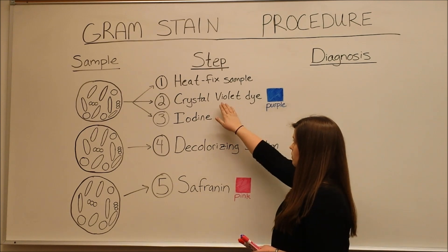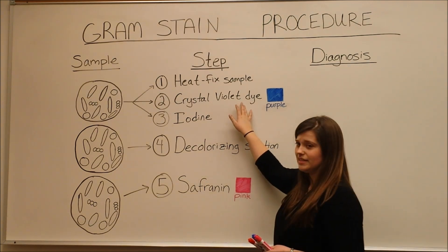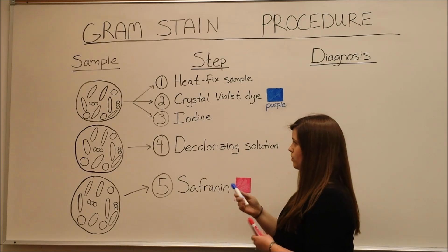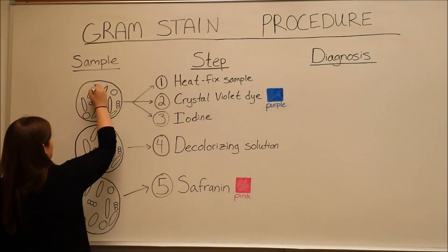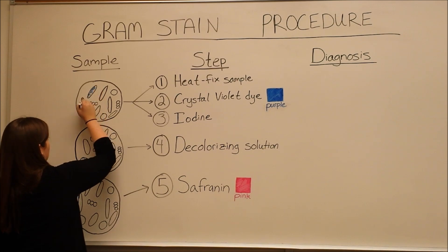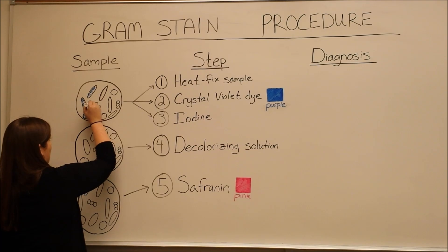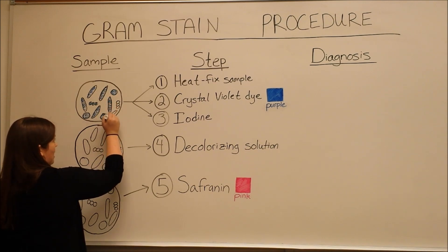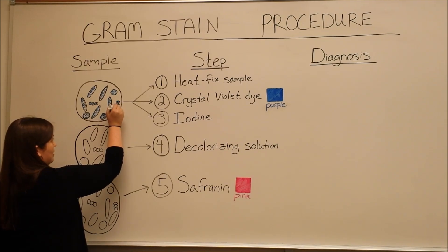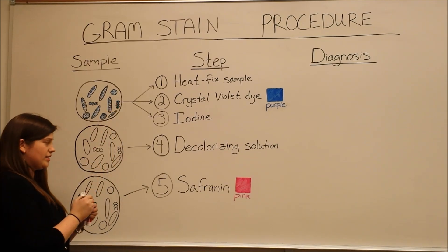The second step is the use of crystal violet dye. This is a purple dye that stains all of the bacteria. After we use this crystal violet dye, all of the bacteria in the sample are going to stain purple. This is because crystal violet dye associates with peptidoglycan, and all of the bacteria have at least some peptidoglycan in their cell walls.